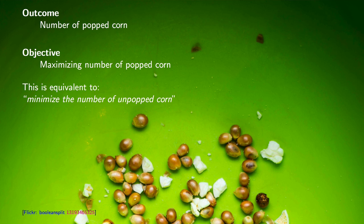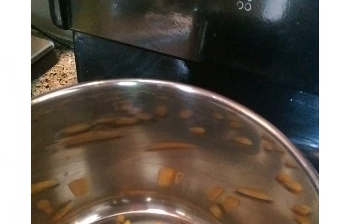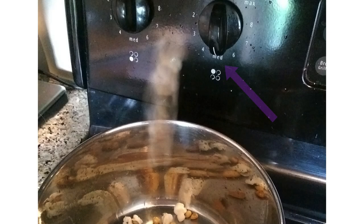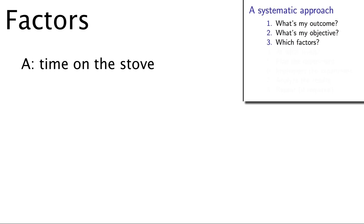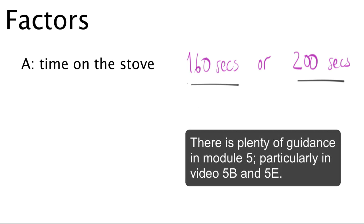We are going to apply the same amount of heat each time and use the same number of raw kernels to start with. From prior experience, I know that between three to four minutes are required, on medium heat, to pop most of the corn. So our first factor is going to be the time on the stove. And I am going to use 160 seconds and 200 seconds. Notice that we use two levels, or two values for this factor, just under three minutes and just over three minutes. Figuring out these numeric values for your experiments takes some practice. You will make mistakes, but we give general advice in coming classes.